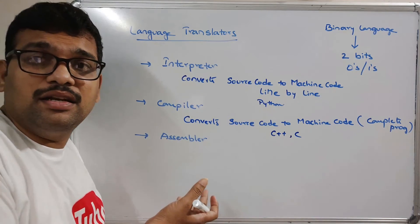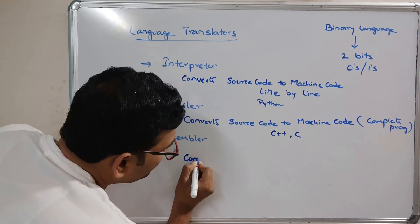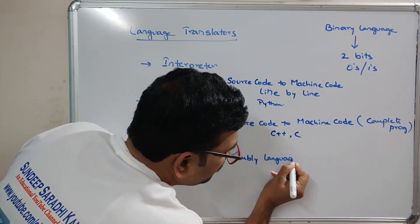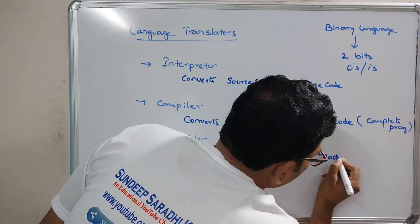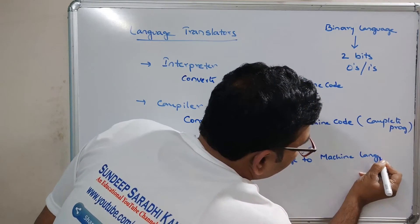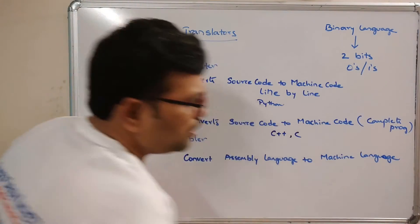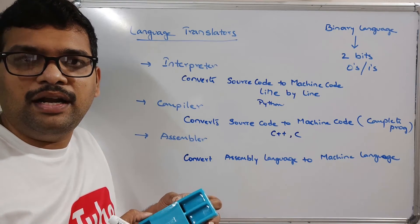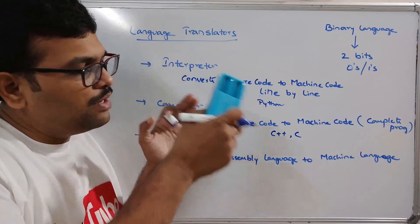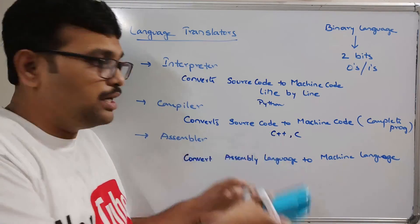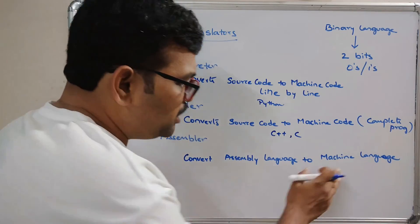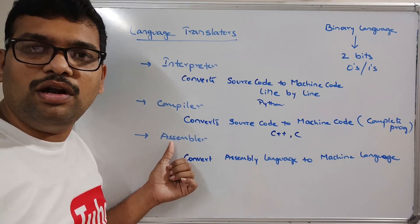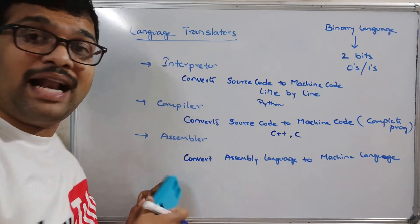We discussed the assembly language, and in order to convert assembly language to machine language we use the assembler. The code written in assembly language has mnemonics, and those mnemonics — those instructions written in assembly language — will be converted to machine language. So assembly code to machine code conversion is done using the translator called assembler. These are the three different language translators.